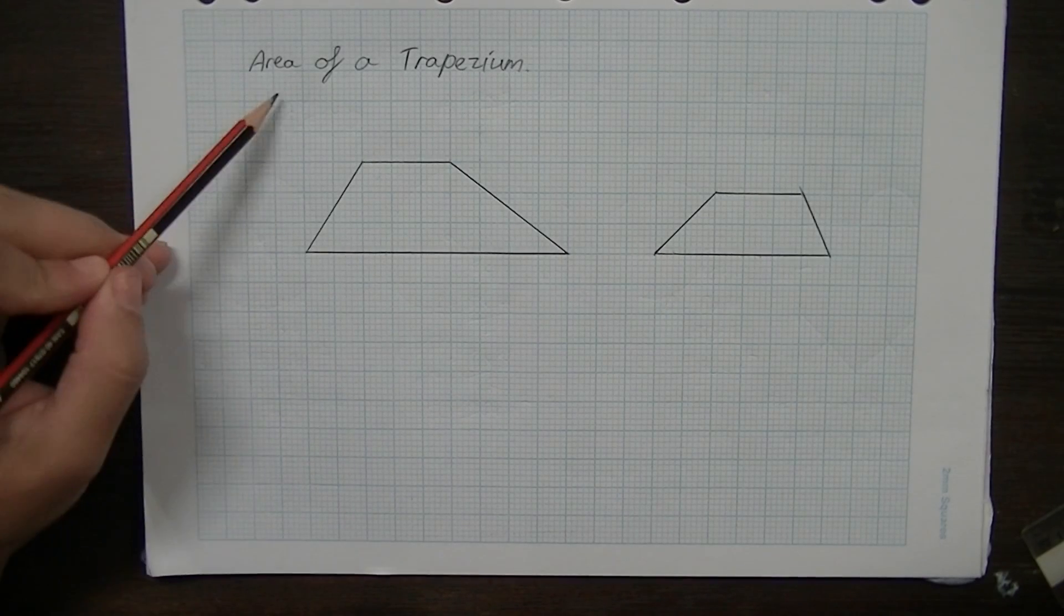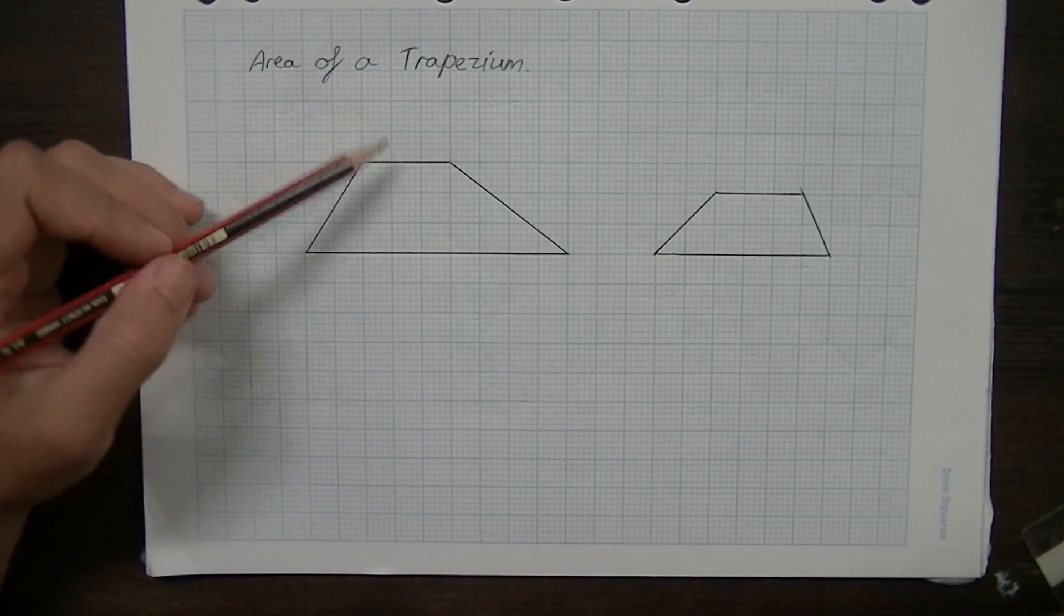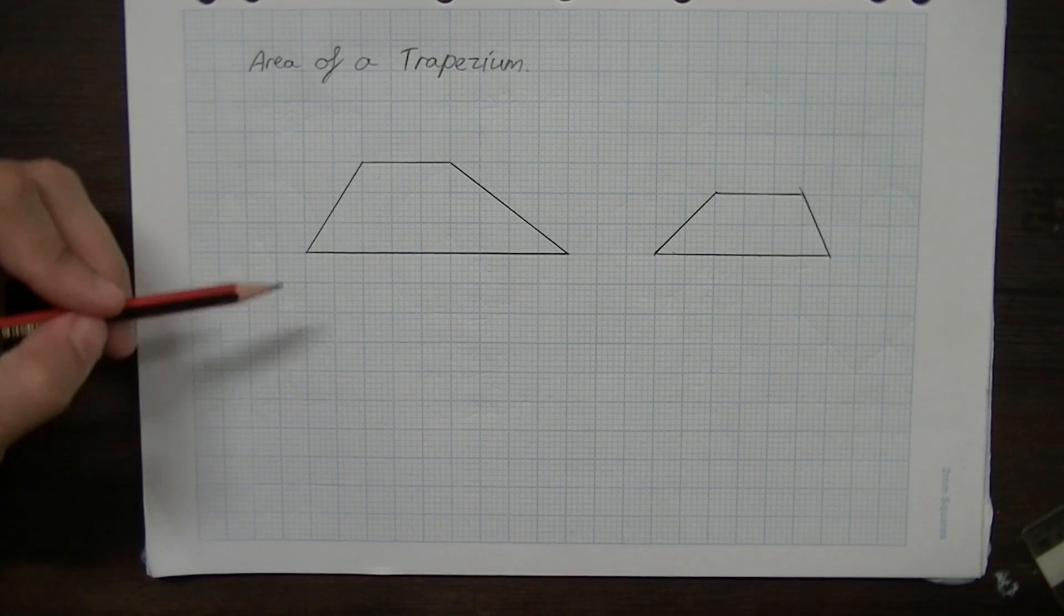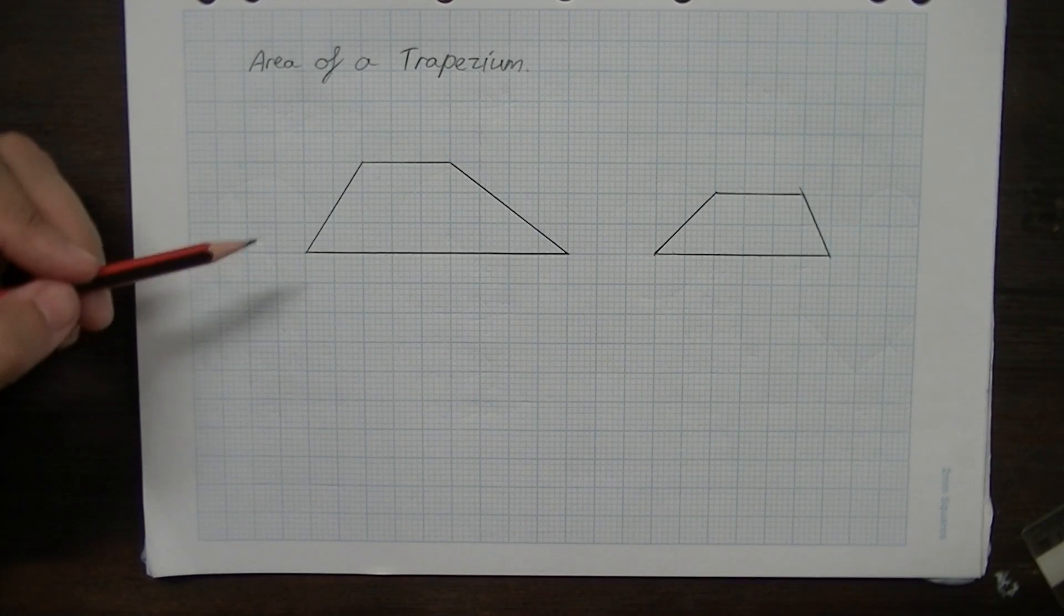So in this video, we're looking at the area of a trapezium. This is slightly more complicated just in terms of what the formula looks like, but it's really quite simple once you get into it.